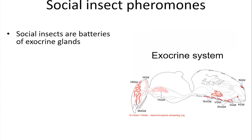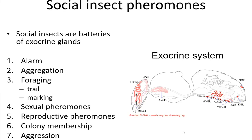Social insects have often been called exocrine gland batteries. Exocrine glands are the glands that produce pheromones, and social insects have many more of these glands than solitary insects do. We think this expansion in the glandular system facilitates social behavior by allowing them to have novel pheromones with social functions. The honeybee has many glands: in the head there are the mandibular glands, the hypopharyngeal glands, and the salivary glands — which in the honeybee have two separate parts with different functions. Then there are the wax glands, the venom gland, the Dufour's gland, the Nasonov gland, and some tarsal glands. Most of them serve various social functions.